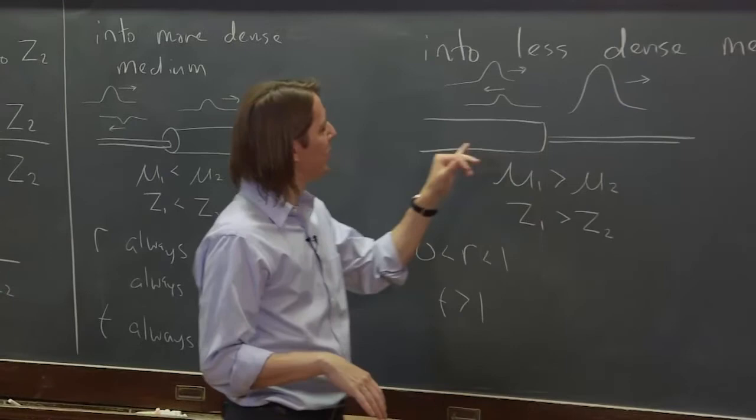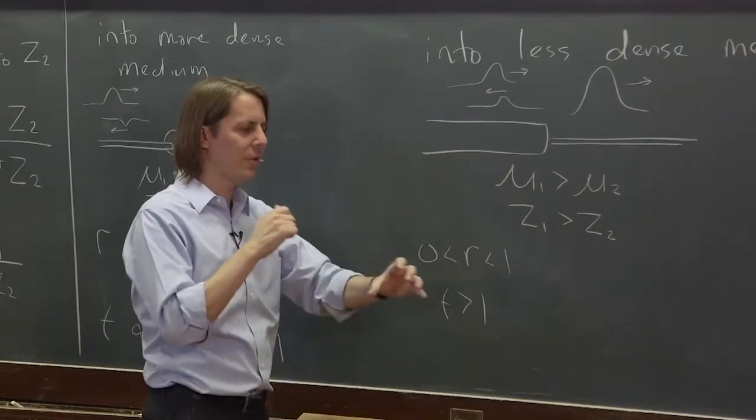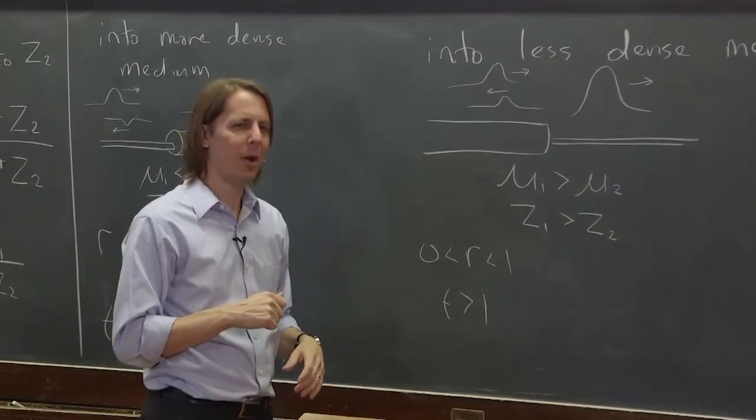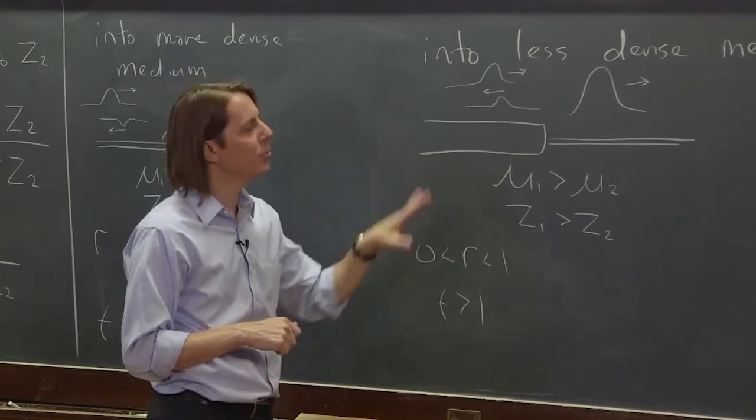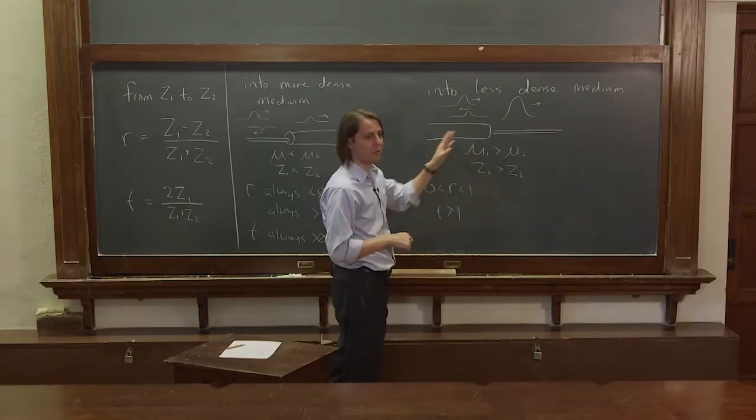This we can't quite simulate for you because my four times a sixth string doesn't accept a wave pulse so well. My launching method doesn't work so well. But trust me, this is what would happen. Run it in reverse if you want to see it. So that's what happens at the interface of two strings.